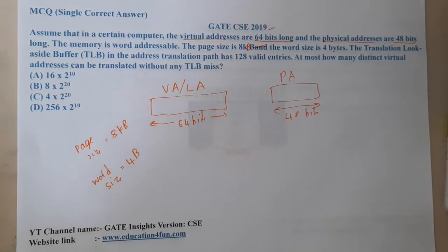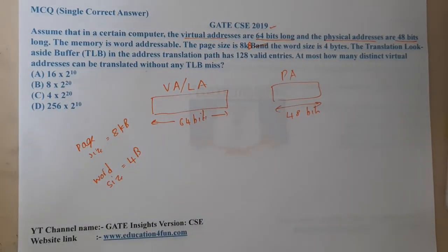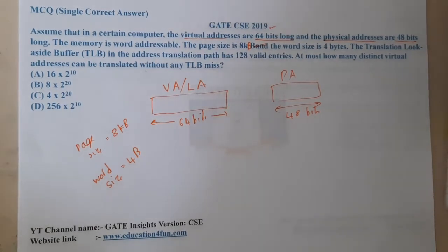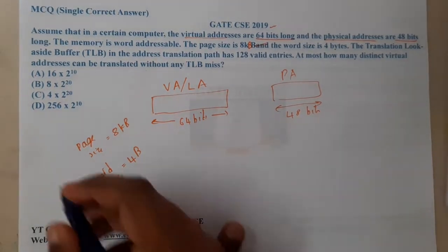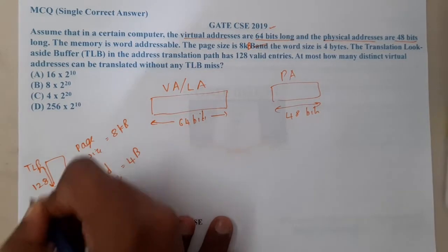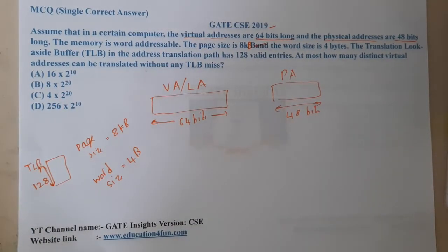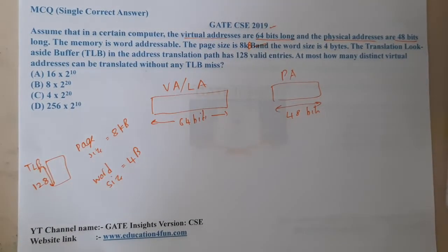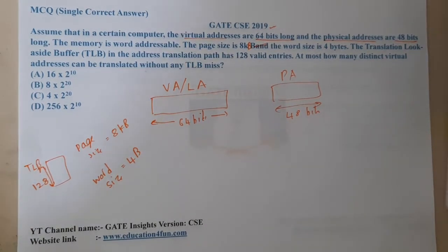The Translation Lookaside Buffer (TLB) in the address translation path has 128 valid entries. The question asks: at most how many distinct virtual addresses can be translated without any TLB miss? Essentially, how many virtual addresses can we translate without a miss?